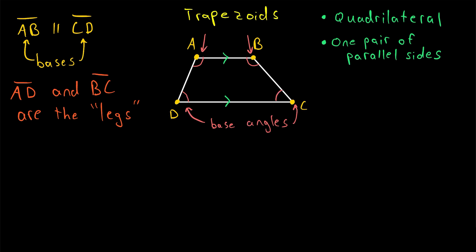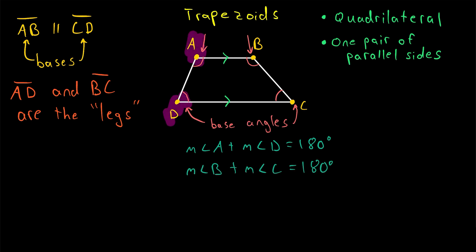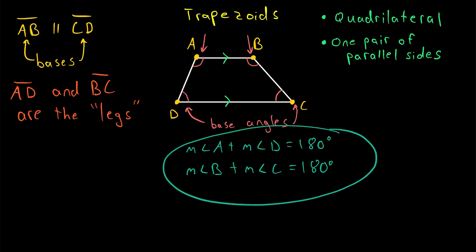However, one thing we do know about the angles of a trapezoid — which is pretty cool — is that if we add two angles that are on the same leg of the trapezoid, they will add up to 180 degrees. So for this trapezoid, the measure of angle A plus the measure of angle D equals 180 degrees. The same is true for angles B and C. Any two angles adjacent to the same leg of the trapezoid add up to 180 degrees.